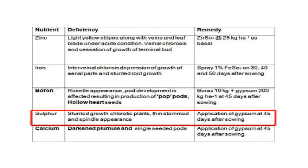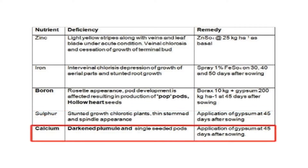Sulfur deficiency and calcium deficiency symptoms include stunted growth, chlorotic plants, thin stems and spindle appearance. Remedy: apply gypsum at 45 days after sowing. Calcium deficiency specifically shows darkened plumule and single-seeded pods. Remedy: apply gypsum at 45 days after sowing.